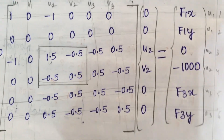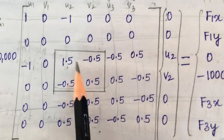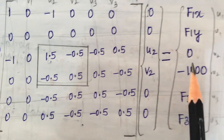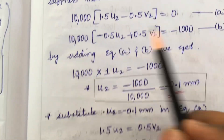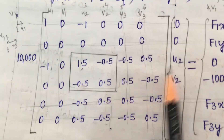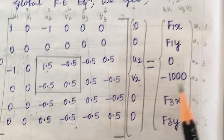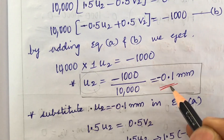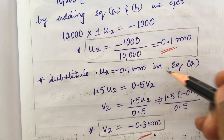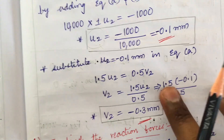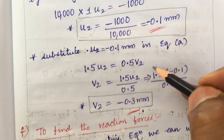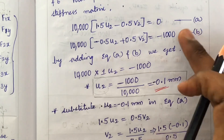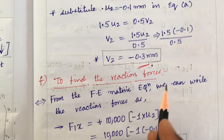After elimination, we solve the reduced system. The equations give: 10,000 times 1.5 times u2 minus 0.5 times v2 equals 0, and 10,000 times negative 0.5 times u2 plus 0.5 times v2 equals negative 1000. Solving these two equations, u2 equals negative 0.1 millimeters and v2 equals negative 0.3 millimeters.